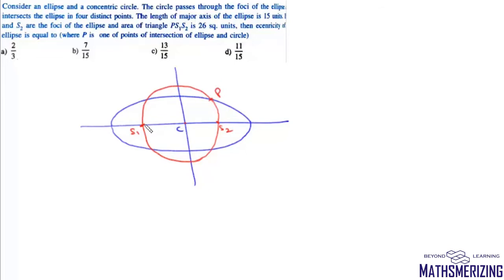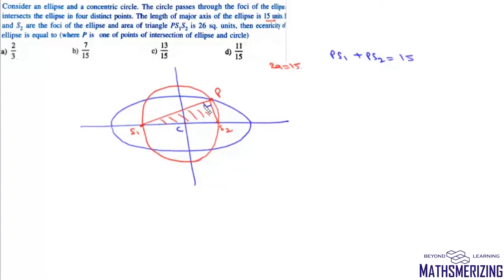Let P be one of the intersection points. Given 2a = 15. Since S1S2 is a diameter and P lies on the circle, angle S1PS2 = 90°. Area of triangle PS1S2 = ½ · PS1 · PS2 = 26, so PS1 · PS2 = 52. By the focal property, PS1 + PS2 = 2a = 15.